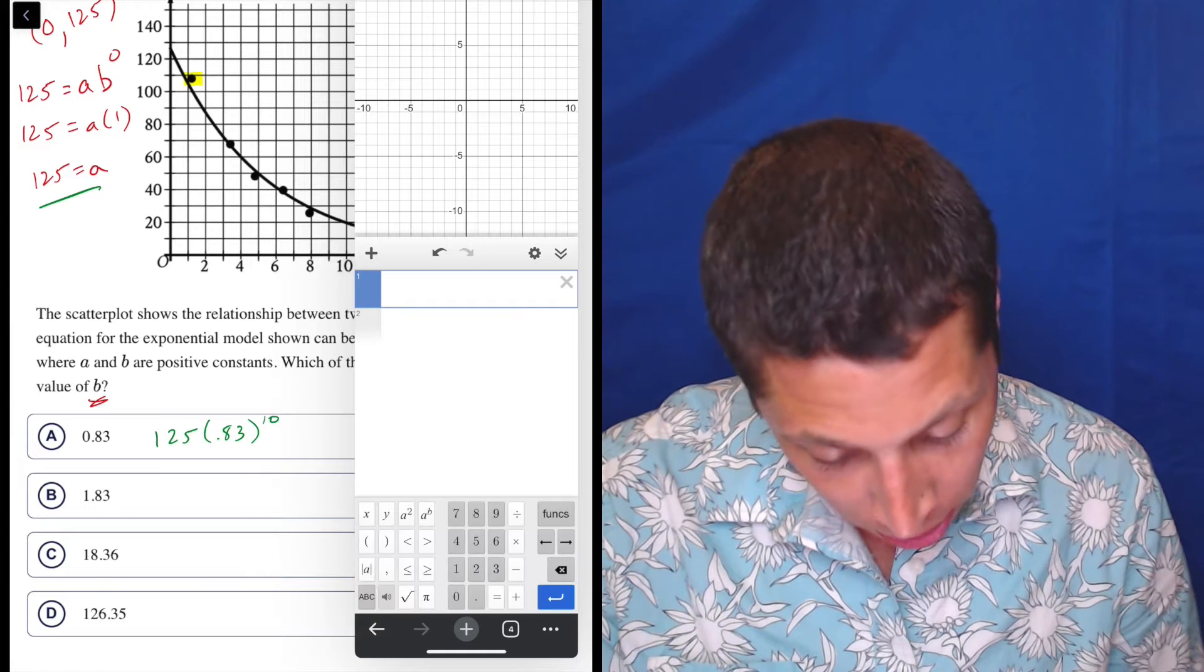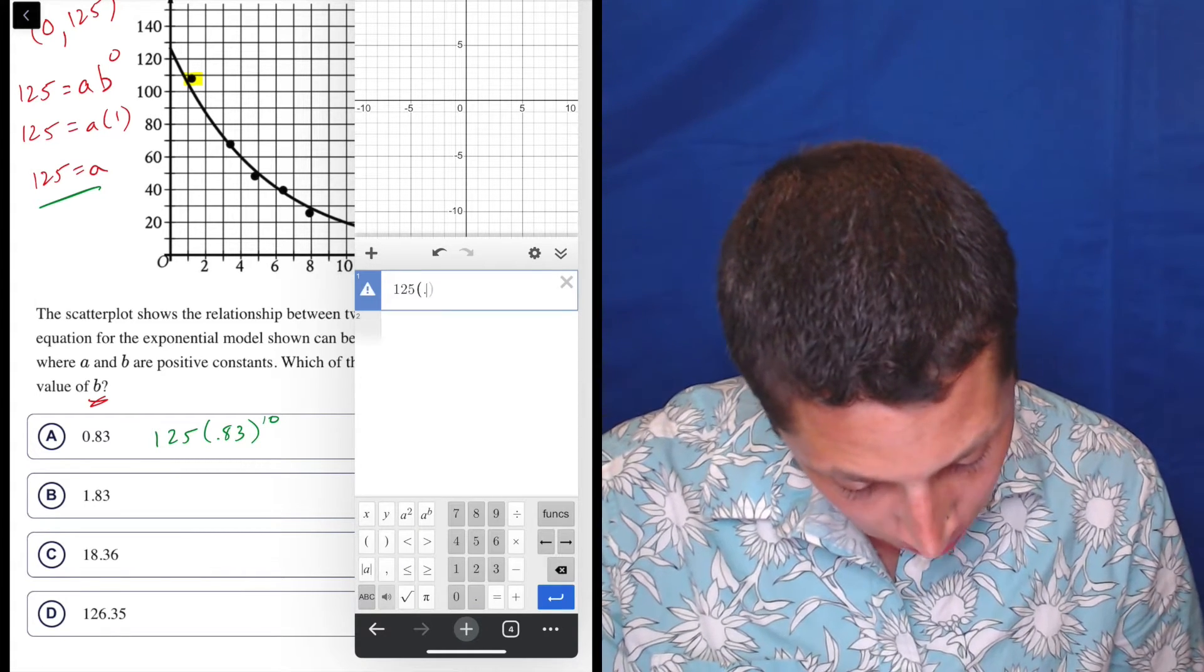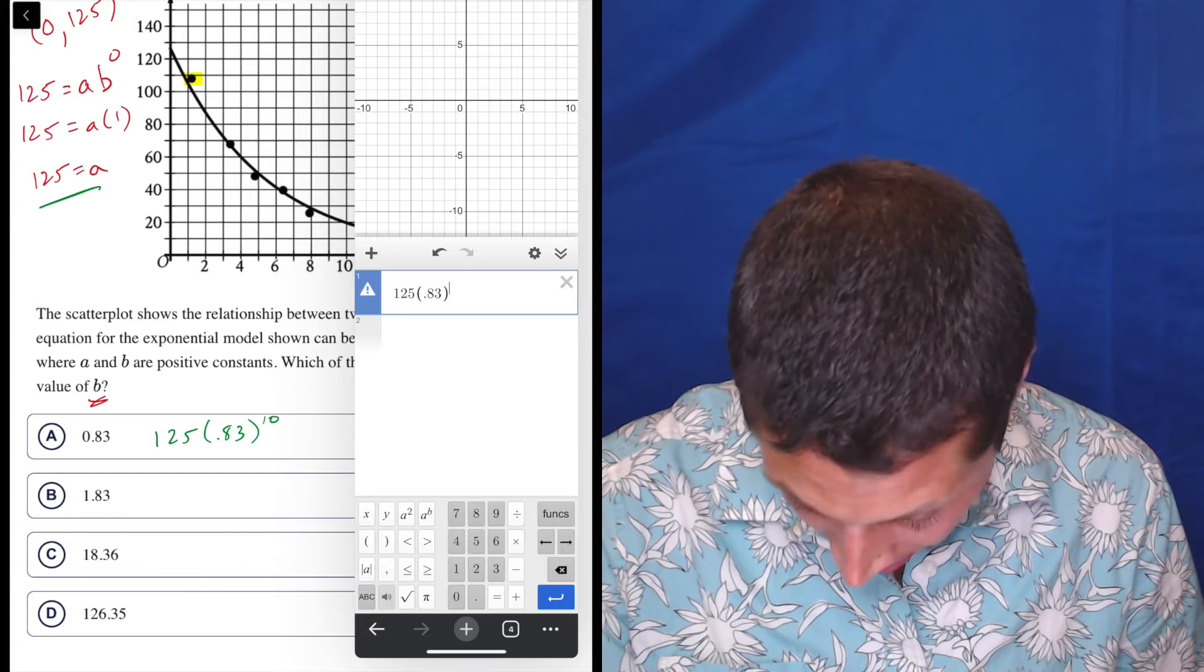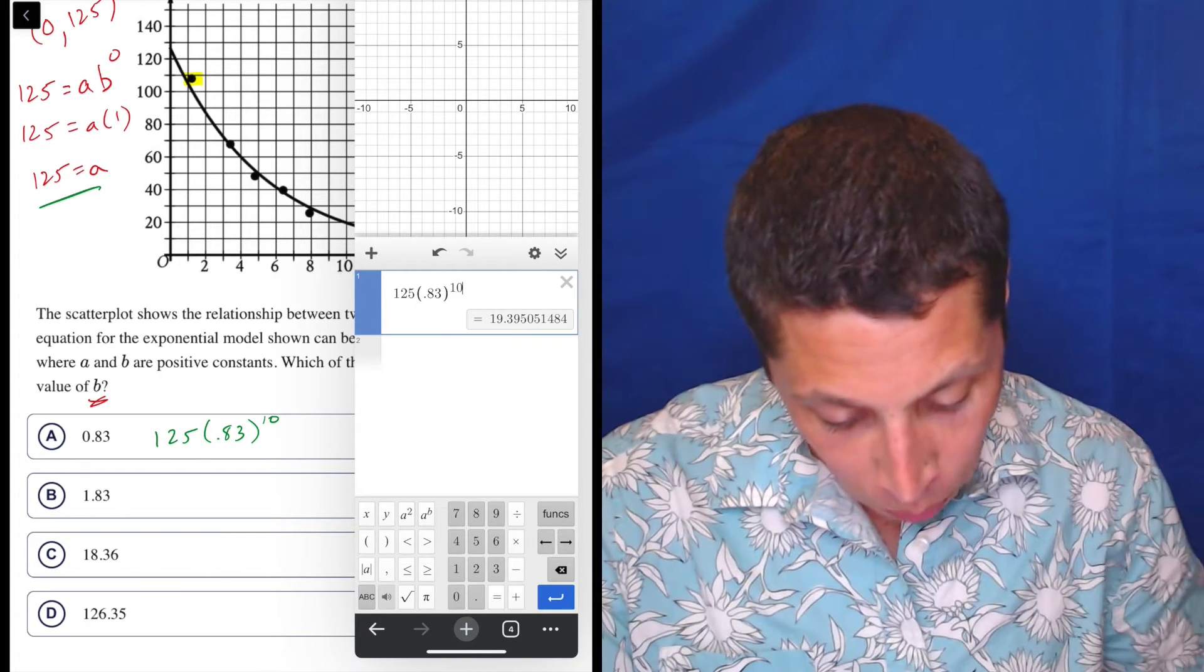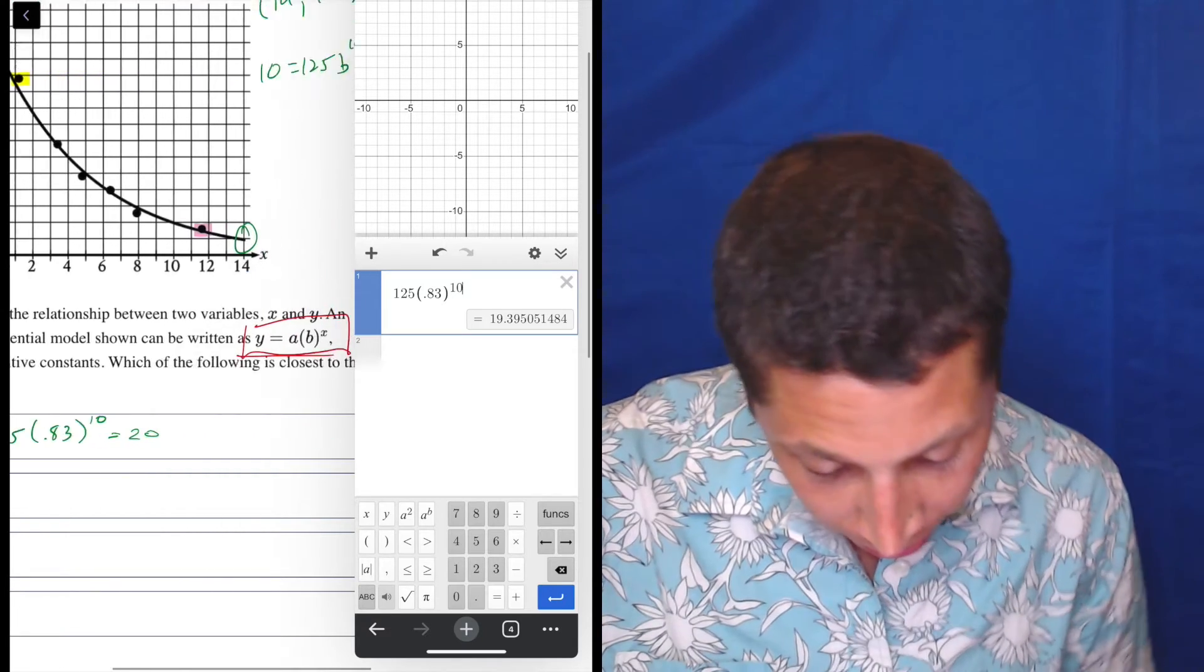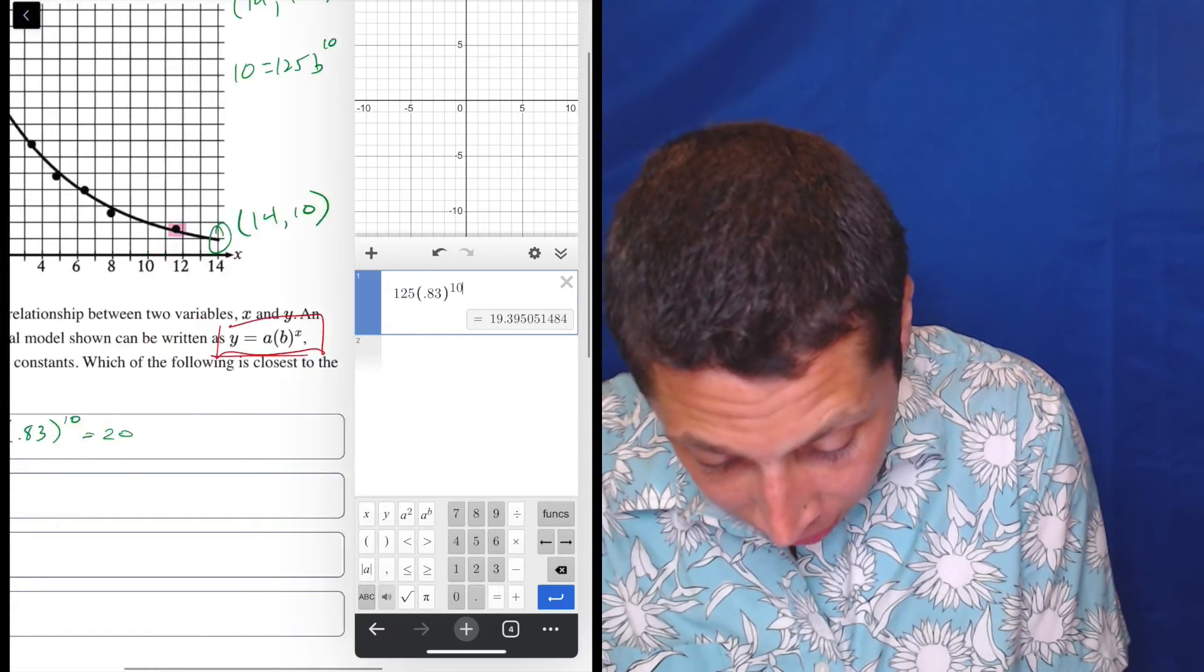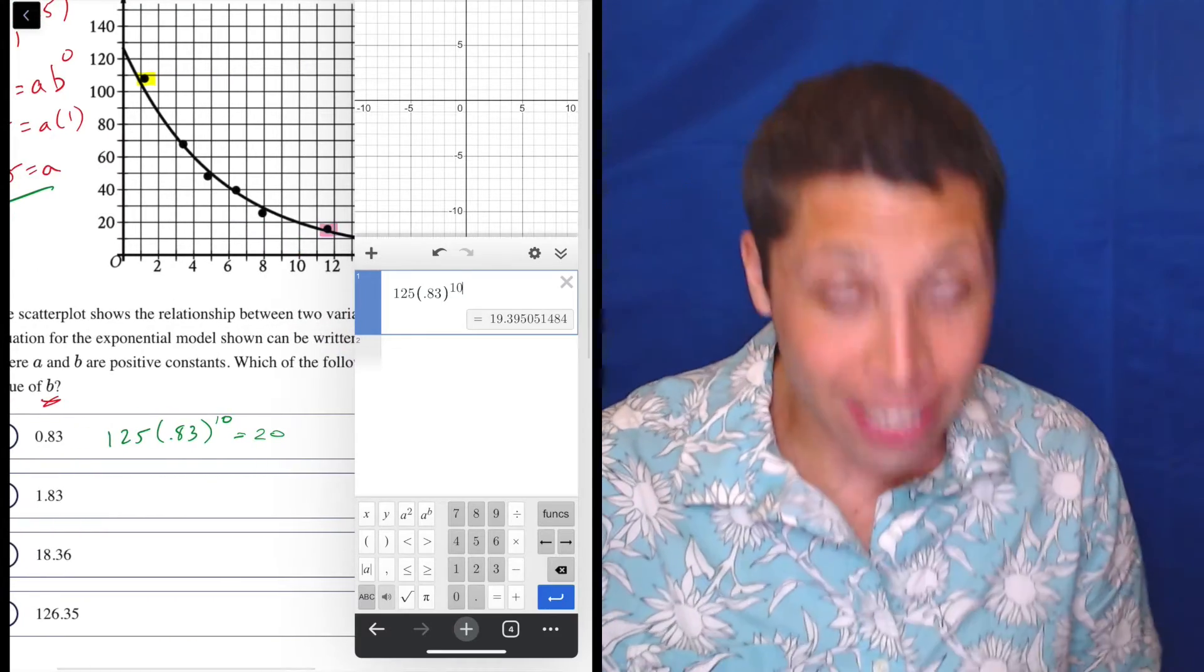I'm actually going to use Desmos so I can show you. So 125 times 0.83 to the 10th. And what we're looking for is do we get close to what we wanted? So this gives us a value of 20. So I don't know. Is that close to 10? That's what we said this point was. We said this was 14, 10. Am I reading the graph right? I'm reading it right. But is that close? Well, let's see. Let's do other points and see what happens.